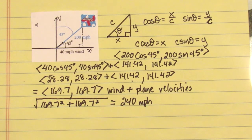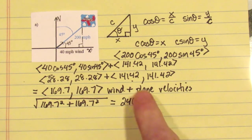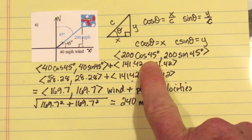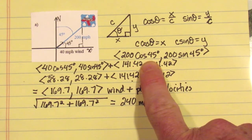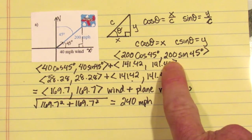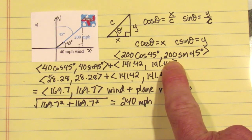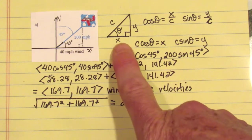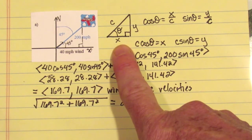The terminal point of the plane's velocity vector will then be equal to 200 times cosine of 45 degrees — that's the 45 degrees measured from the x-axis — and the y coordinate will be 200 times sine of 45 degrees. Those definitions come from our right triangle definitions of sine and cosine.